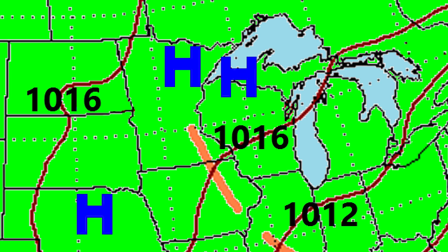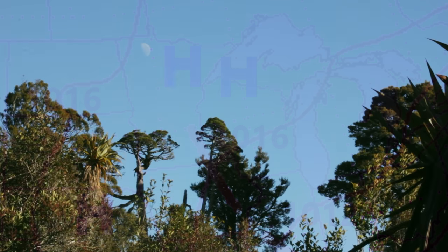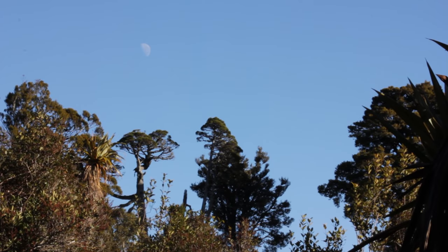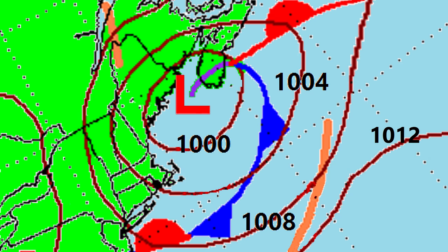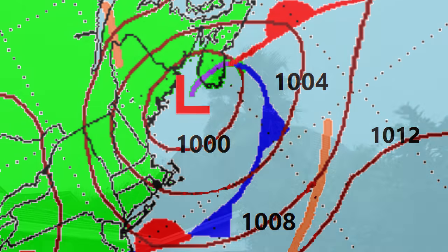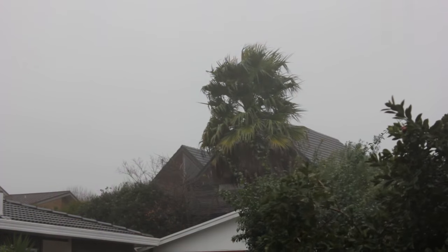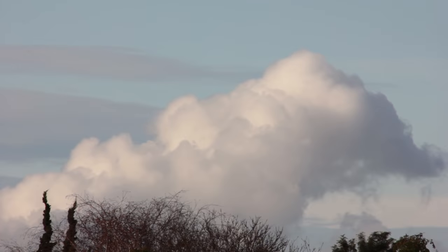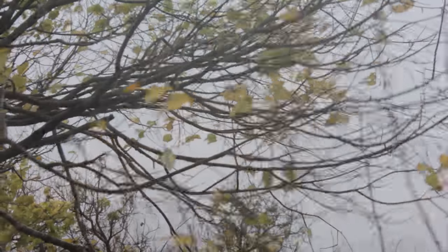On a weather map, areas of high pressure, or anticyclones, are identified by the letter H. These areas are associated with clear skies and little wind. Areas of low pressure, or depressions, are usually identified by the letter L and are associated with rain, clouds, and high winds.